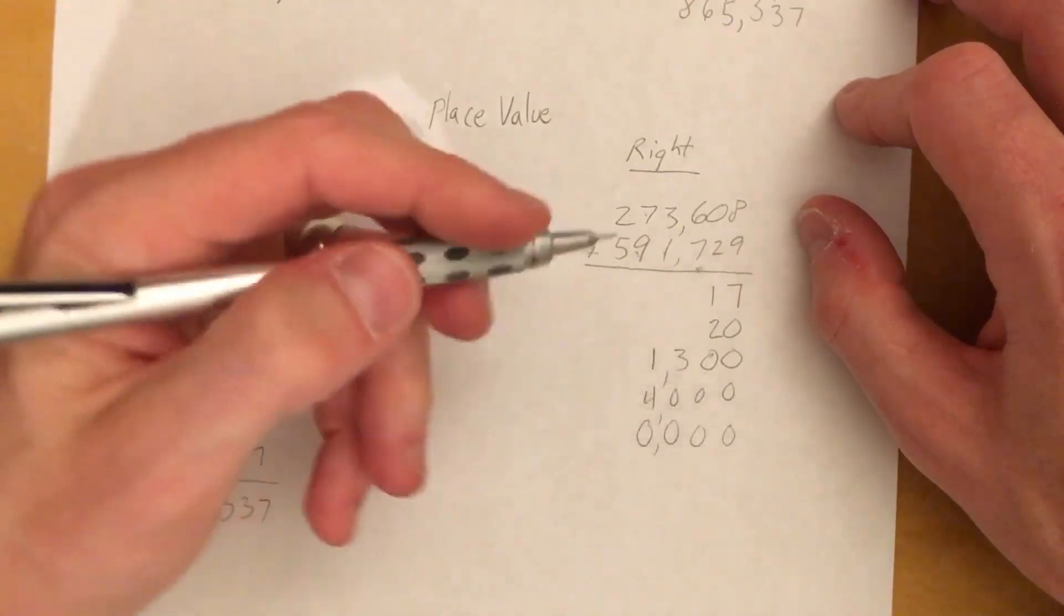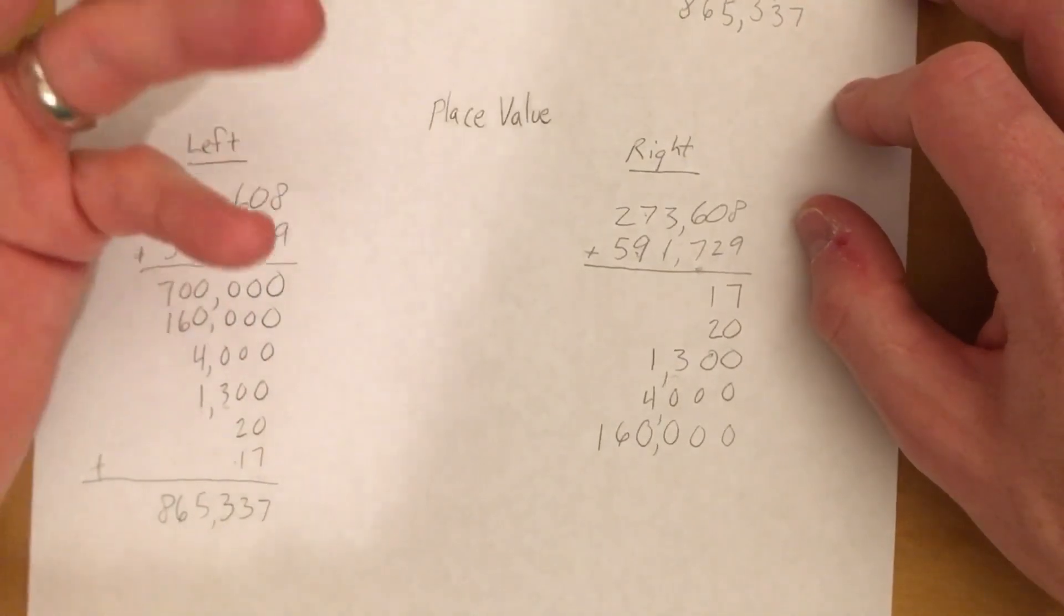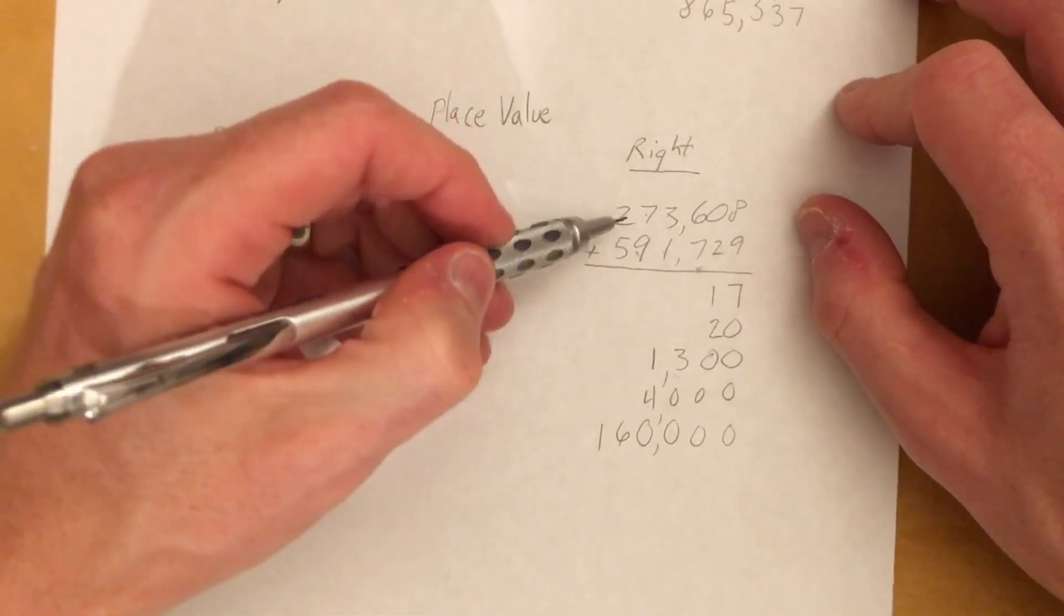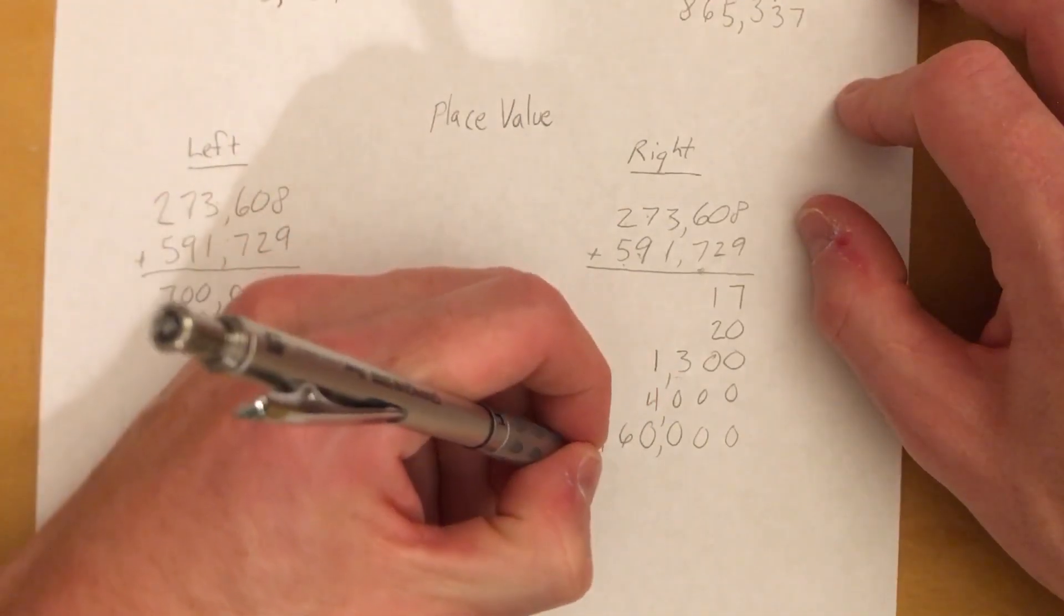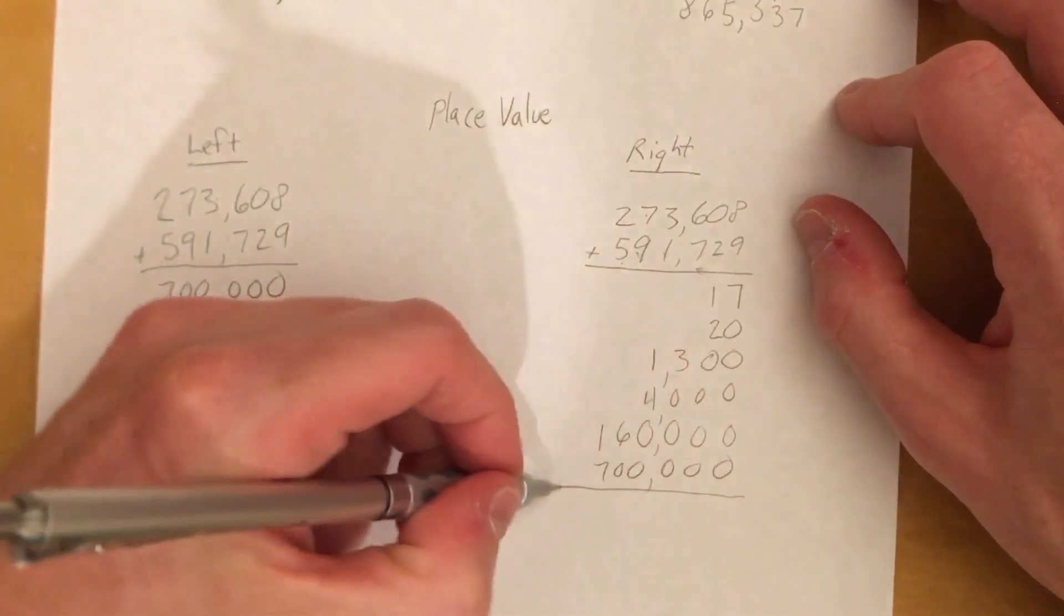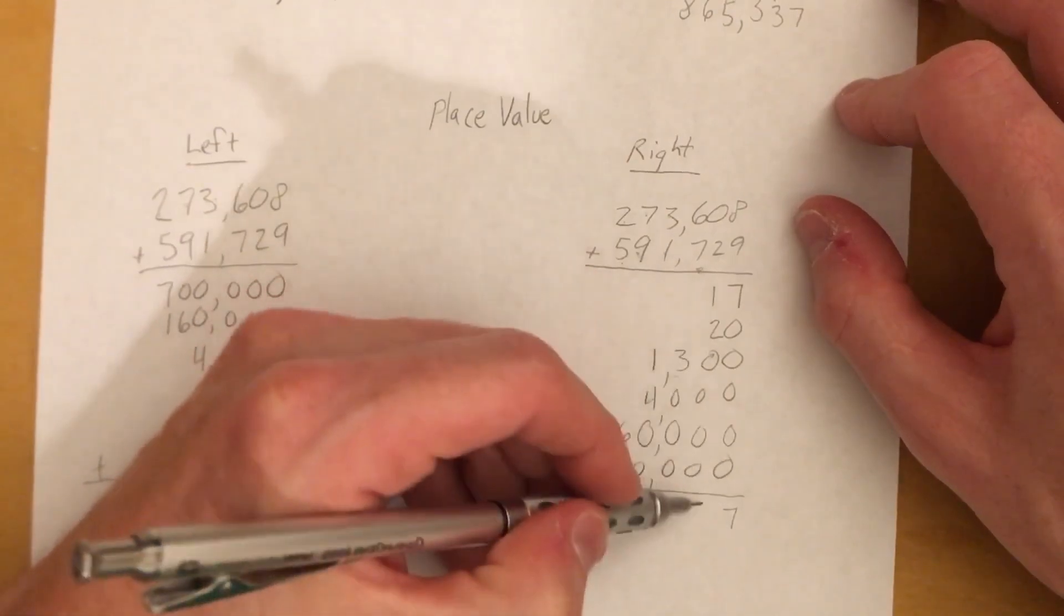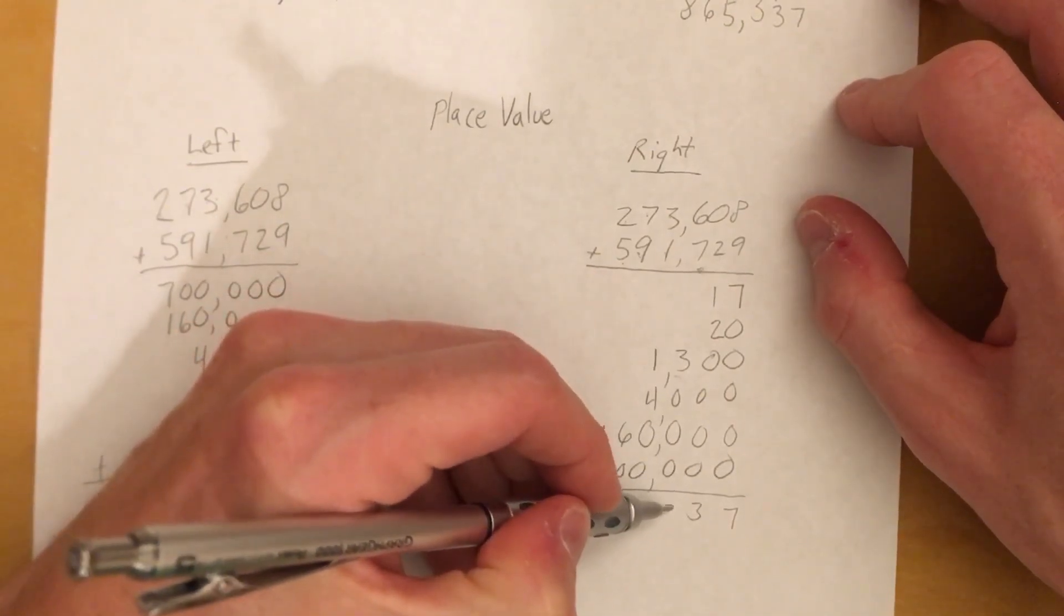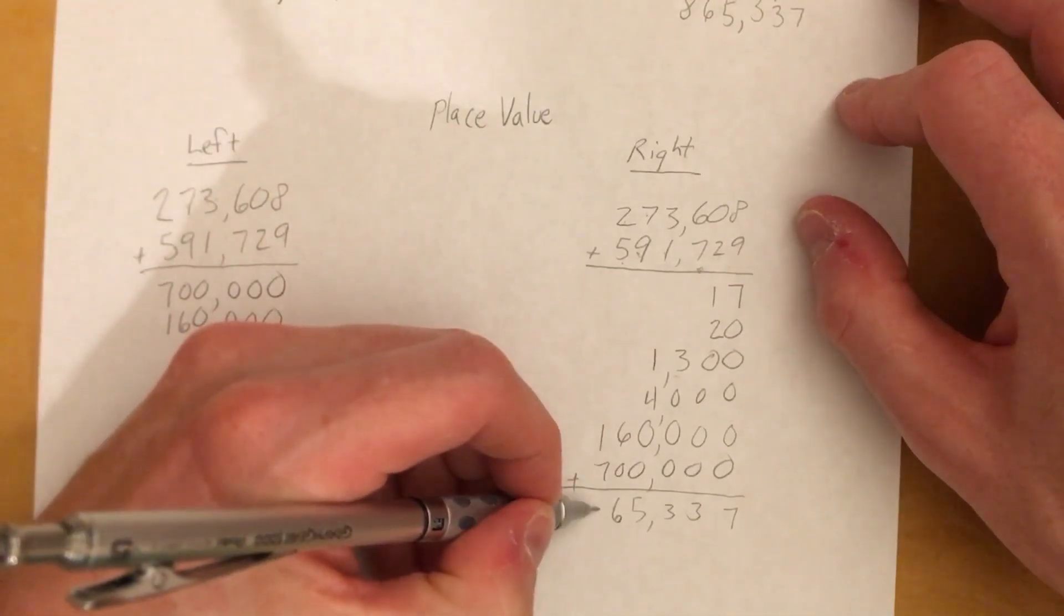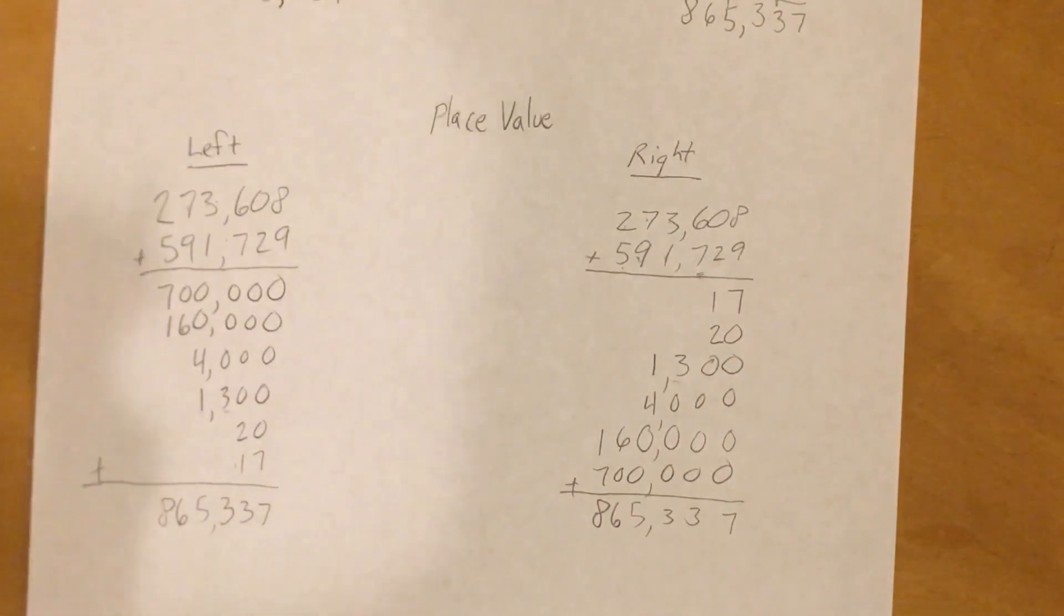Then we have our 200,000 plus 500,000 equals 700,000. Then we just once again add them all up, coming down this way. So we end up with 7, 3, 3, 5—don't forget your comma—6 and 8. So hopefully that gets you started.